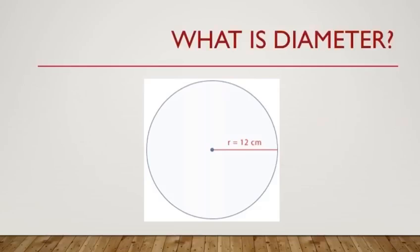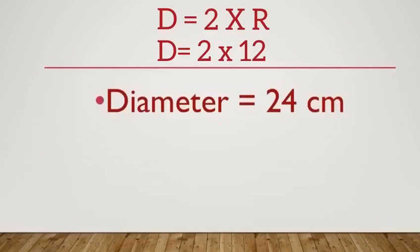So, let us learn with an example. Here we have a circle of radius 12 cm. So, what will be the diameter? Very good. Diameter will be 24 cm as it is double of radius.